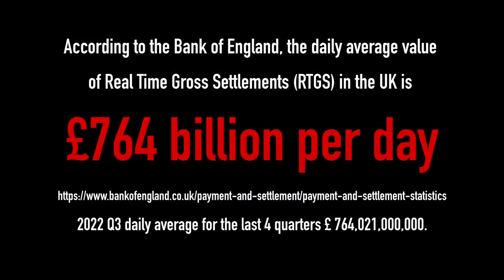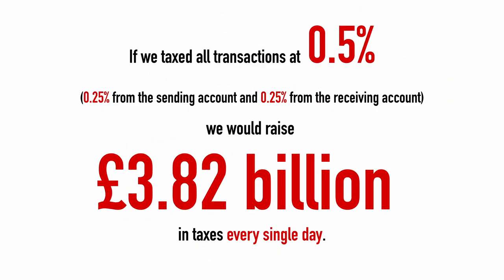According to the Bank of England, the daily average value of real-time gross settlements in the UK is £764 billion per day. If we taxed all transactions at 0.5%, half from the sending account and half from the receiver, we would raise £3.82 billion in taxes every single day.